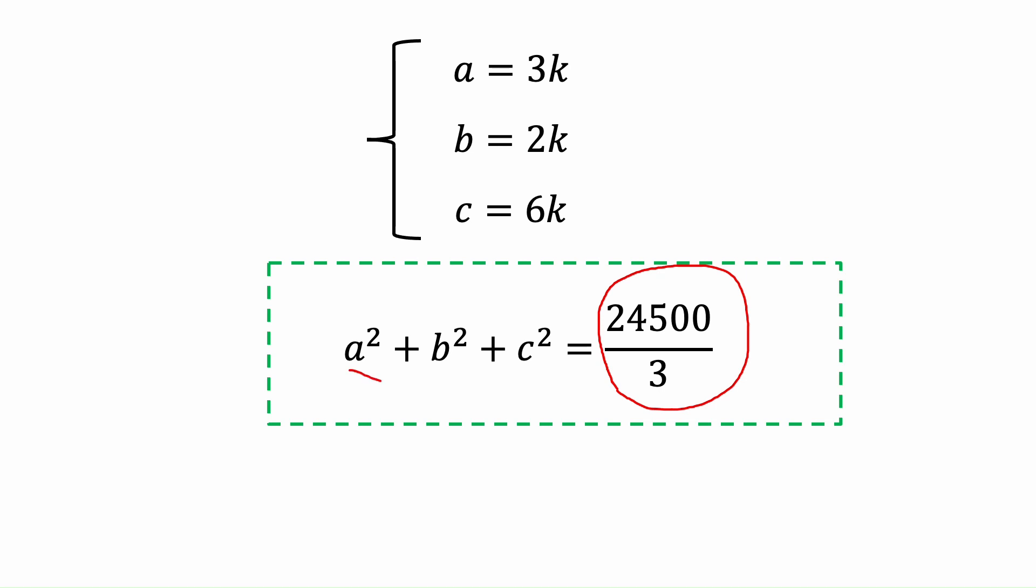So a² + b² + c² is 24,500 over 3, and that's our answer. Thank you for watching. I hope you enjoyed the video.